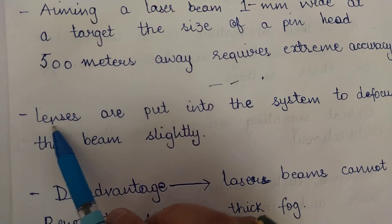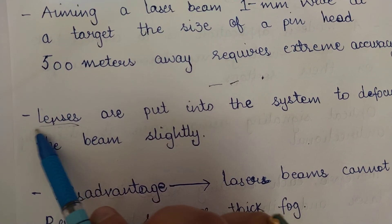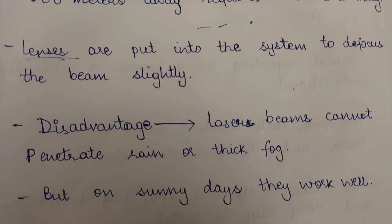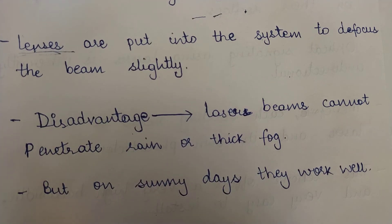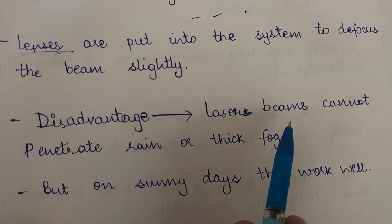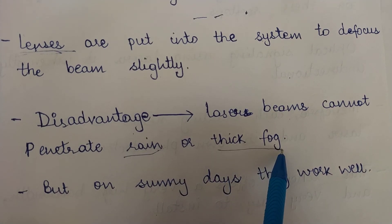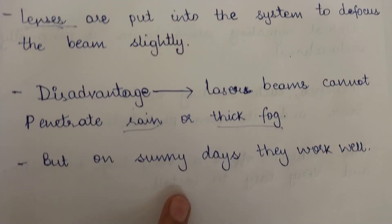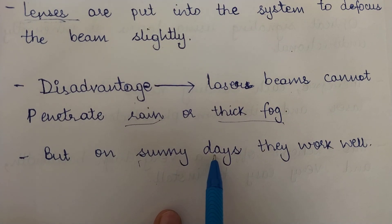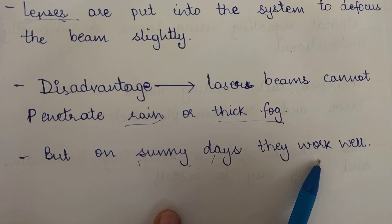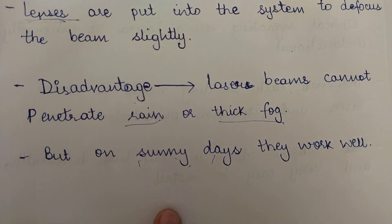The disadvantage of a laser beam used in light wave transmission or optical signaling is that it cannot penetrate rain or thick fog. However, on sunny days, laser-based light wave transmission works very well. That is all about light wave transmission.